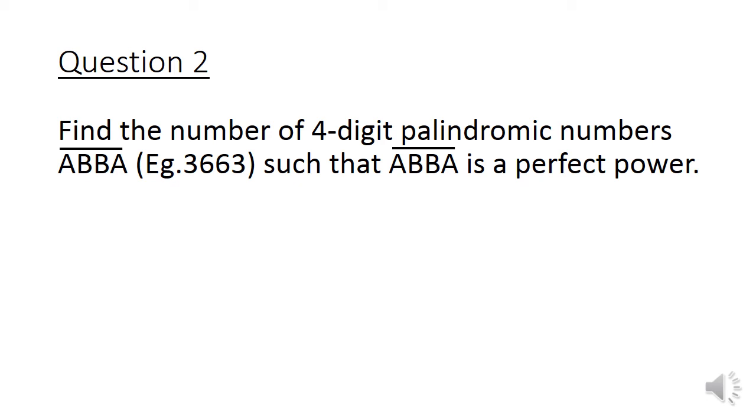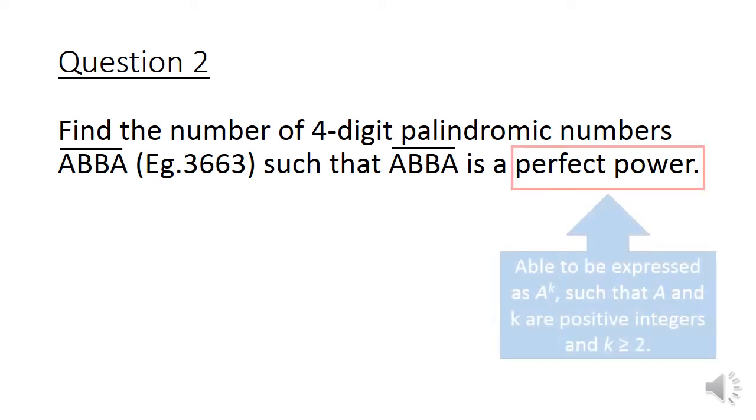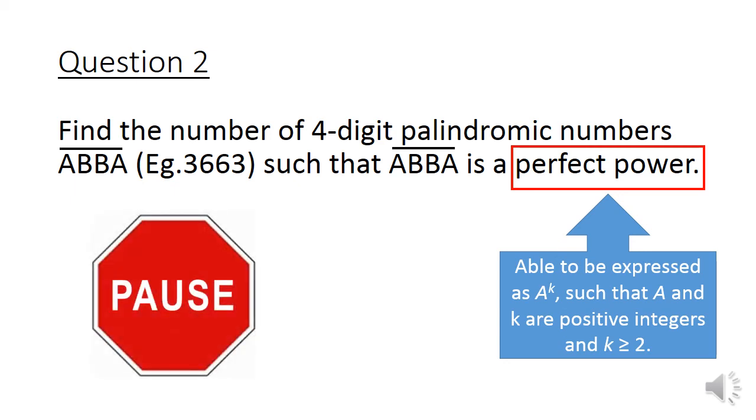Perfect powers are numbers that can be expressed as A to the power of K, such that A and K are positive integers. K has to be at least 2. For example, 32 is a perfect power. 32 is 2 to the power of 5. 81, 81 is 9 to the power of 2, or 3 to the power of 4. I'm going to ask you to pause the video here to give this question a good try.